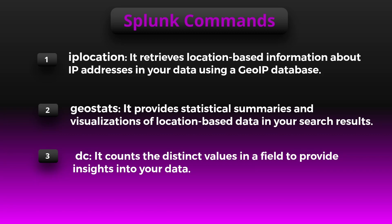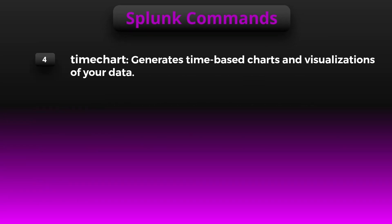The next command is dc, which stands for distinct count. It is a simple but powerful tool for counting the number of unique values in a field. For example, if you have a dataset with user IDs and you want to know how many distinct users there are, you can use the dc command. This is useful for identifying anomalies or understanding unique entities in your dataset.